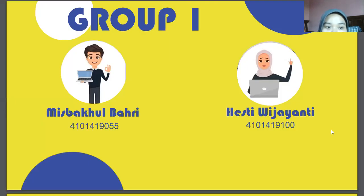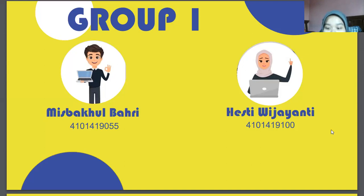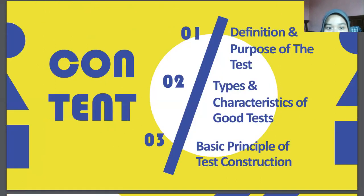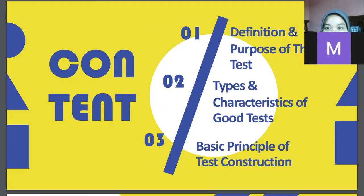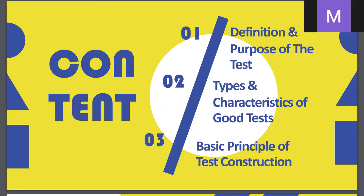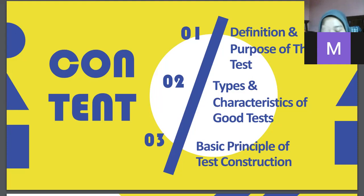We are from group one. The members are Mishwaful Bahri with student number 41014191055, and the other member with student number 104101419100. The content we are going to explain includes: first, definition and purpose of the test; second, types and characteristics of good tests; and third, basic principles of test construction.